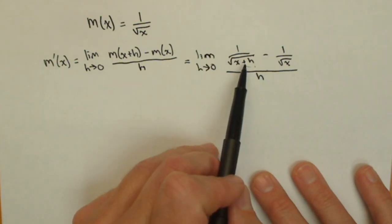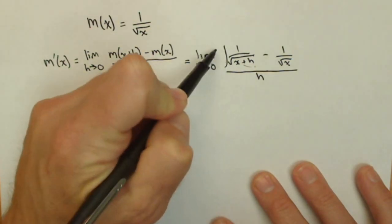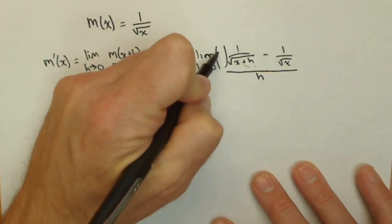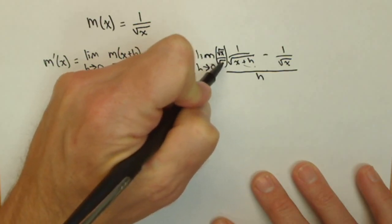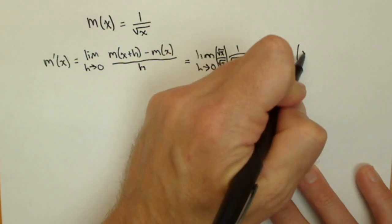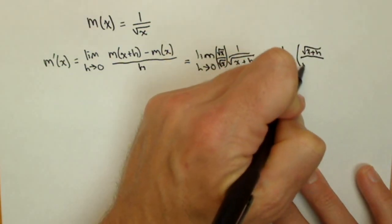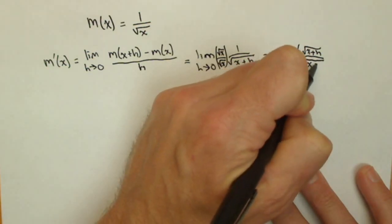The common denominator in this case is going to be the product of our two denominators. So, to give this one the appropriate common denominator, I'm going to have to multiply by square root of x over square root of x. And this one, I'm going to have to multiply by square root of x plus h over square root of x plus h.